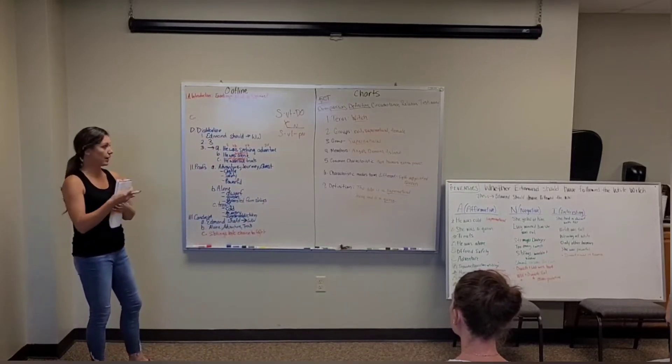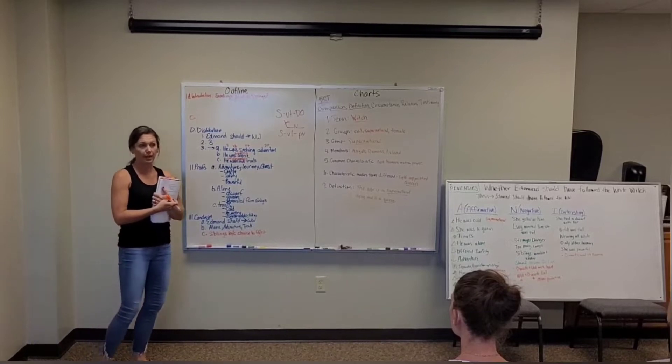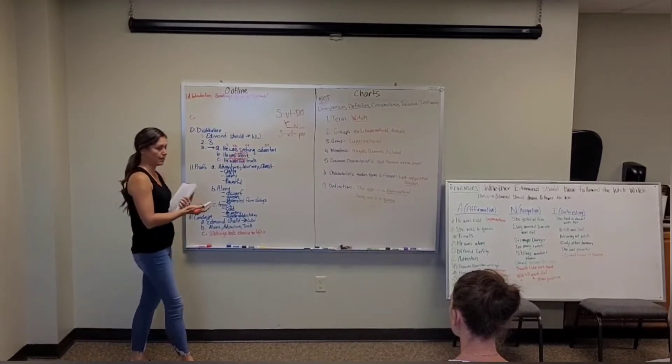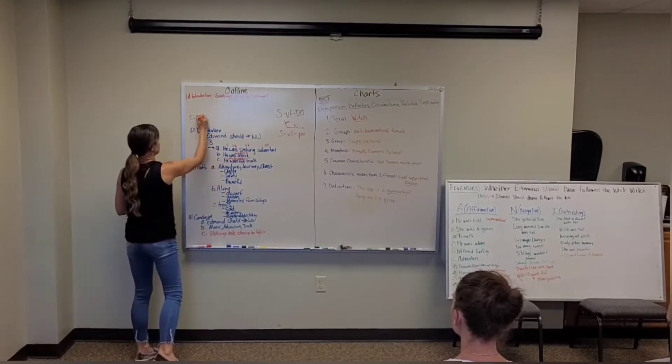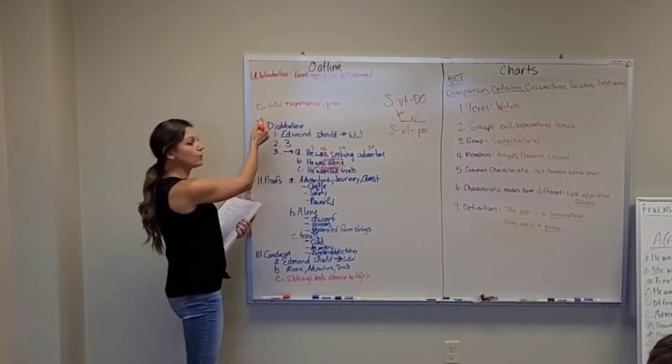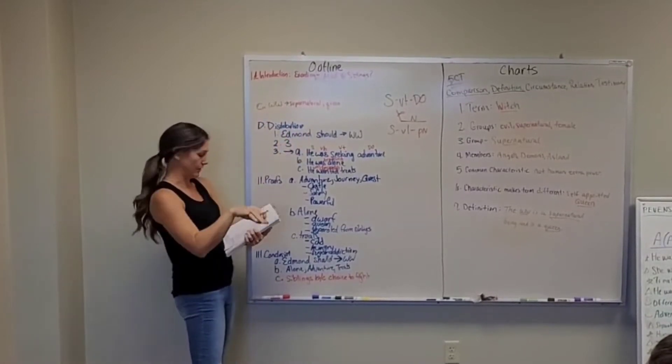Both sides agree that the White Witch is a supernatural being who is a Queen and she holds a lot of power in Narnia. And that affects your decision. So we'll just go with that. So we've got our agreement. This is what both sides, and you are going to word it. Both sides agree that the White Witch is blah, blah, blah, blah, blah.